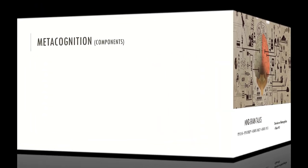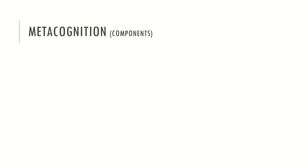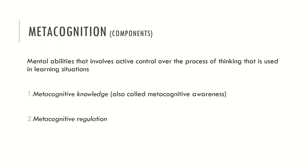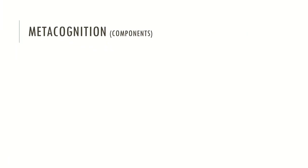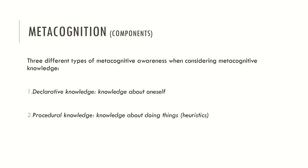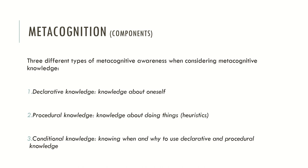We can also look at metacognition within these compounds: mental abilities that involve active control over the process of thinking used in learning situations — metacognitive knowledge, metacognitive regulation and metacognitive experiences. There are three types of metacognitive awareness within metacognitive knowledge. Declarative knowledge, which is knowledge about oneself. Procedural knowledge, which is knowledge about how to do things, how we use our mental heuristics to behave in a given situation or to apply a given strategy. And conditional knowledge — knowing when and why to use declarative and procedural knowledge to apply in a specific situation.